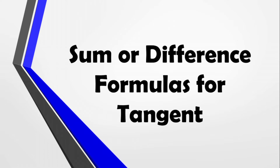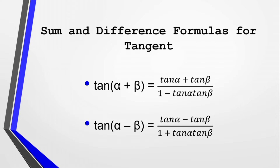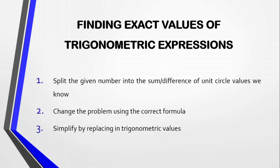In this video, let's discuss the sum or difference formulas for tangent. For sum, we have tangent of (a plus b) is equal to tan a plus tan b over 1 minus tan a times tan b. For difference, we have tangent of (a minus b) is equal to tan a minus tan b over 1 plus tan a times tan b.